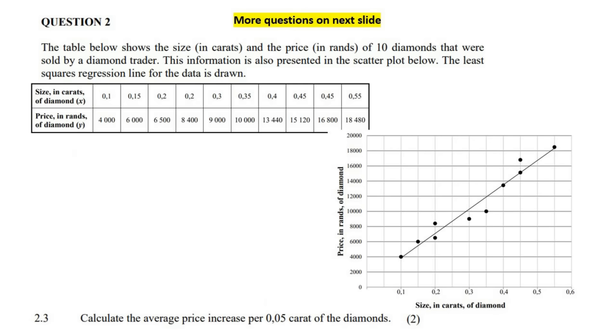This question says calculate the average price increase per 0.05 carat of the diamond. So what they want to know is as the price of the carat changes by 0.05, what happens to the average price? We know from the previous question that a 0.25 carat had a price of 8681.70 rand. Then I would increase that by 0.05, so I would go up to 0.3 carat - that's the increase of 0.05. Don't use the table, you must use your formula, which was y equals 634.38 plus 32189.26x.